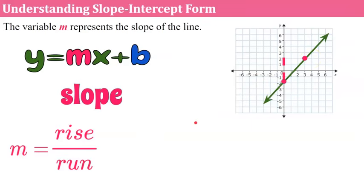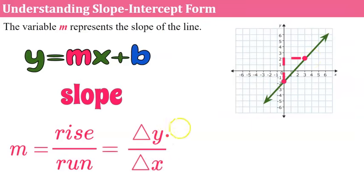We also refer to this as our change in y. Our rise is our change in y-coordinates from one point to the other, because we're changing distance on the y-axis, all over the change in x — our horizontal distance. So vertical distance over horizontal distance between two points forms the ratio.